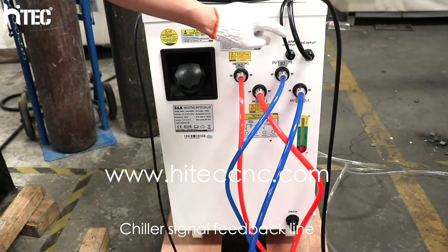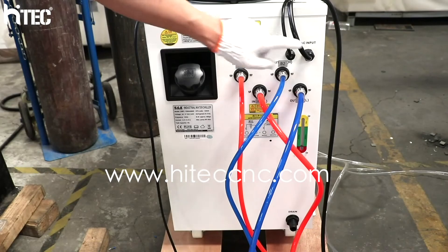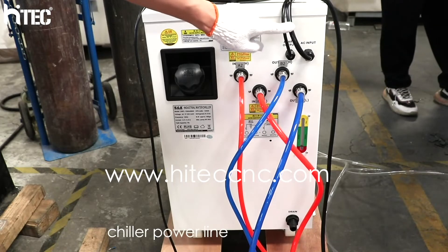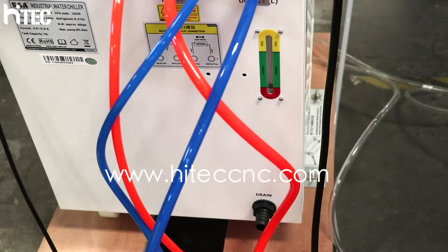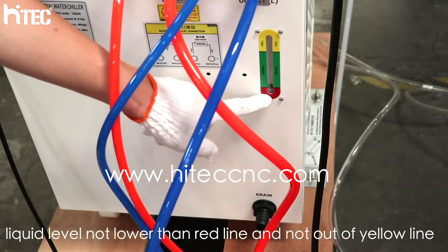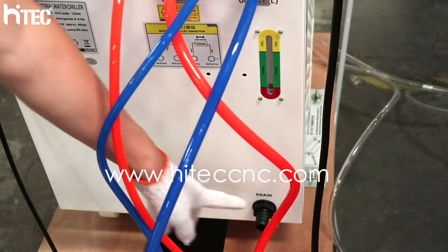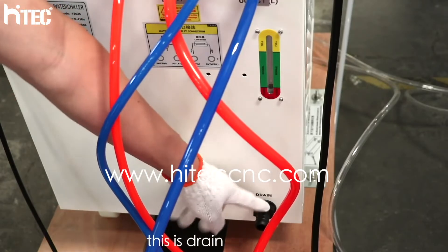Chiller signal feedback line. Chiller power line. Liquid level not lower than red line and not out of yellow line. This is drain.